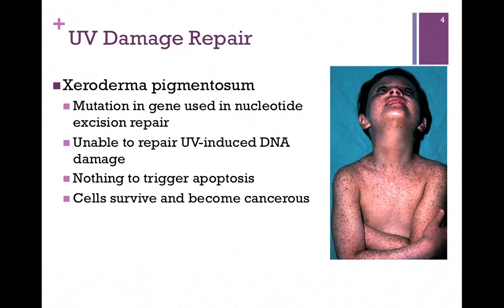A disease known as xeroderma pigmentosum results from a mutation in a gene used in nucleotide excision repair. These individuals are unable to repair UV-induced DNA damage. In an earlier lesson, we saw that if the DNA in a cell has been severely mutated or badly damaged, the cell is triggered to undergo apoptosis — programmed cell death — to ensure that progeny cells don't result that are severely mutated.